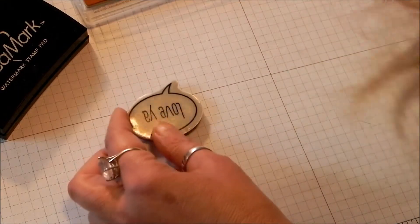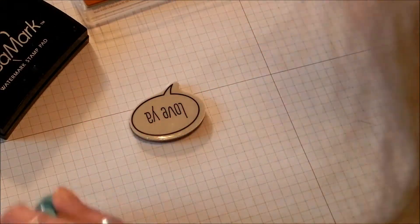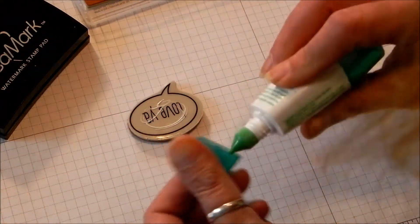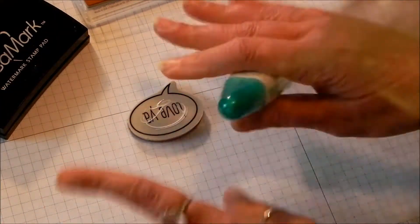So what I want you to do now is take out your Tombow glue and just a real thin layer like that. And let it dry.